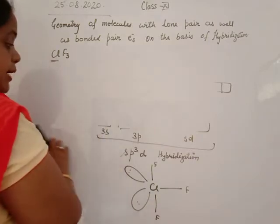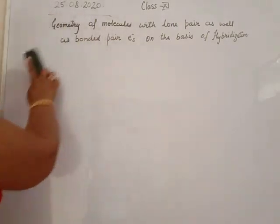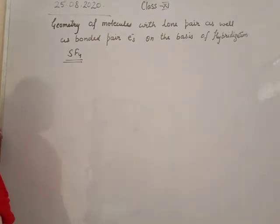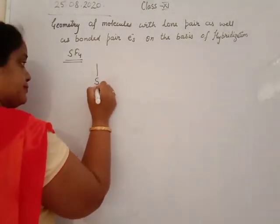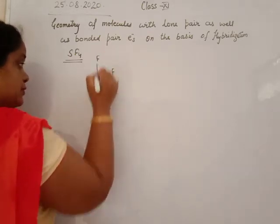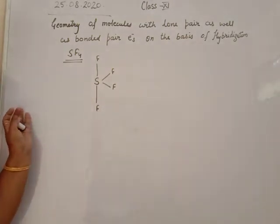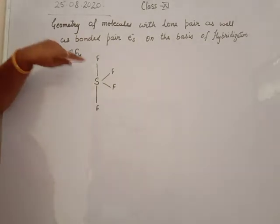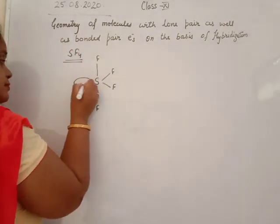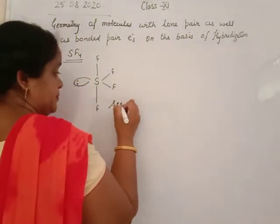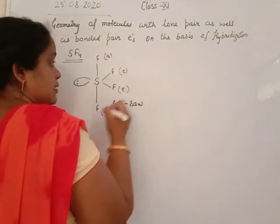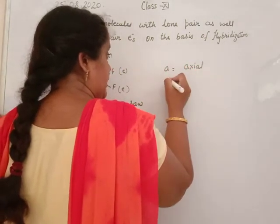Now for SF4: in the case of SF4, there are 4 bonded pairs and 1 lone pair. The geometry has equatorial and axial positions — 2 are axial and the others are equatorial. You should calculate the hybridization yourself for this molecule.